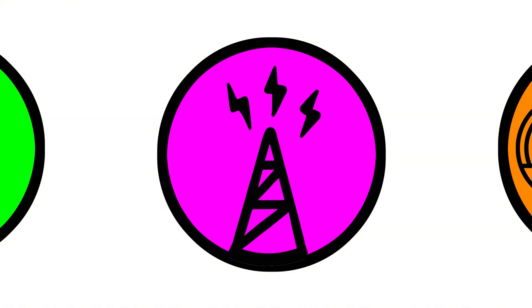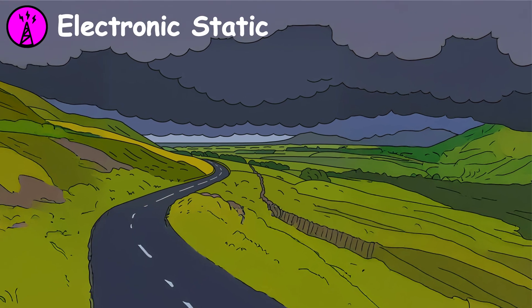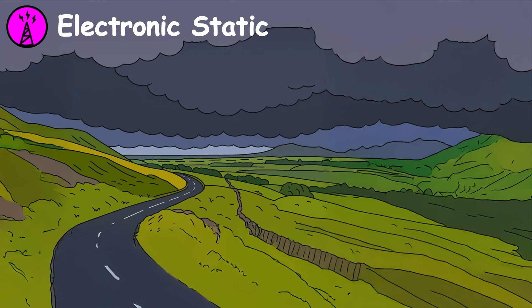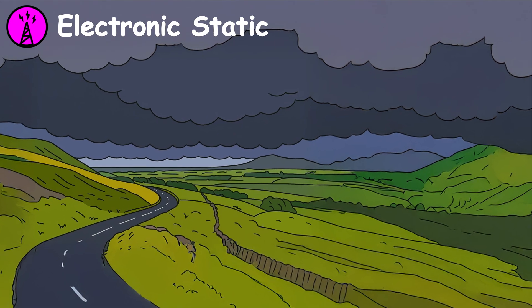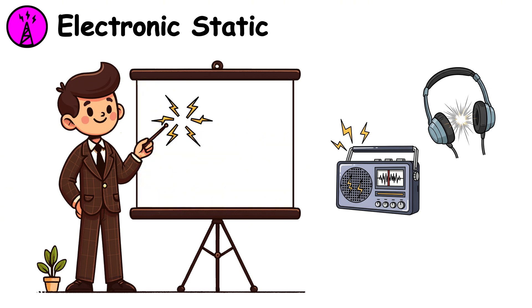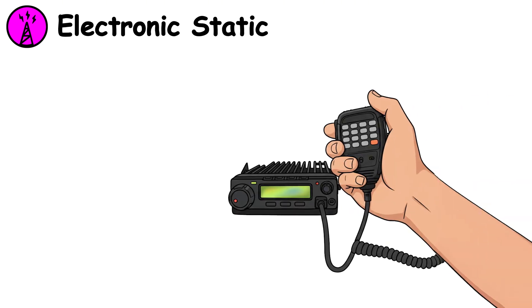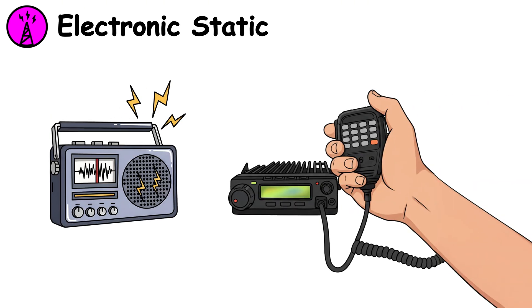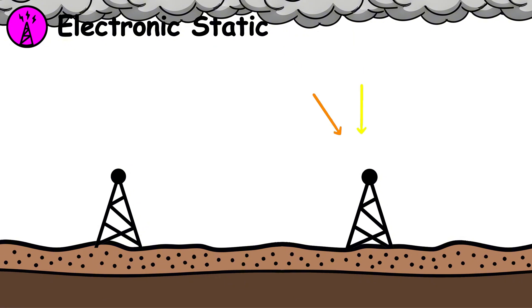Electronic static. As the storm's electric field intensifies, it distorts nearby radio waves and electromagnetic signals. Devices that rely on these frequencies, like radios or wired headphones that act as small antennas, detect the interference as bursts of static or crackles. If you're using an AM radio, you may hear loud bursts of static or popping sounds, even between stations.